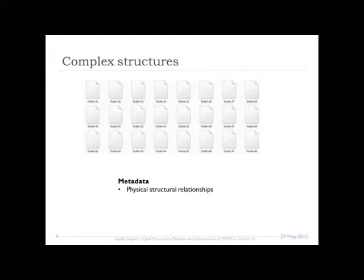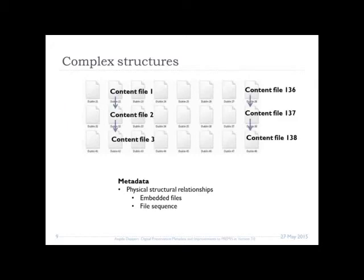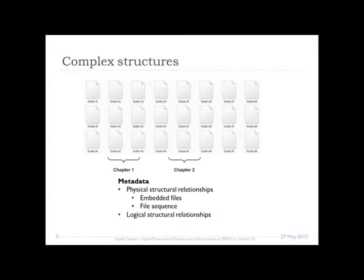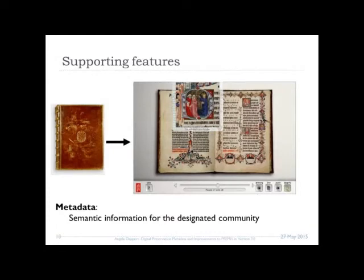I also need structural metadata, because digital objects are much more granular than traditional objects — they're broken down into many little pieces. For physical relationships, I might have an HTML file that has a GIF and a JPEG embedded in it, and I might have many files that need to be read in sequence, so I need to know the root file and the sequence. I also need to understand logical structural relationships not obvious from a set of computer files — where is the title page, the table of contents, the first page, and which chapters are in which computer files.